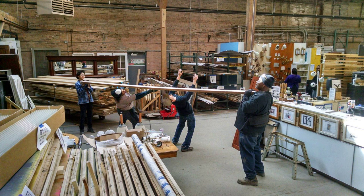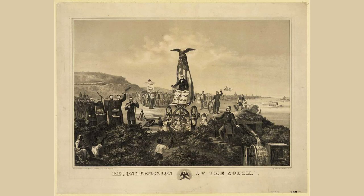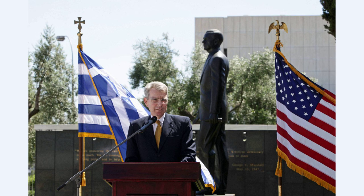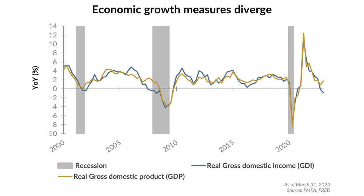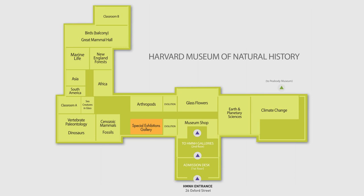The Marshall Plan stands as a testament to the power of visionary leadership, international cooperation, and the determination to rebuild in the face of adversity. It was a bold and ambitious initiative that not only provided much-needed aid to war-torn Europe, but also reshaped the global landscape. Through the Marshall Plan, Europe was able to rise from the ashes of war and embark on a path of recovery and prosperity. It fostered economic growth, strengthened democratic institutions, and played a crucial role in preventing the spread of communism. The impact of this historic plan can still be felt today, as Europe stands as a beacon of stability and unity.